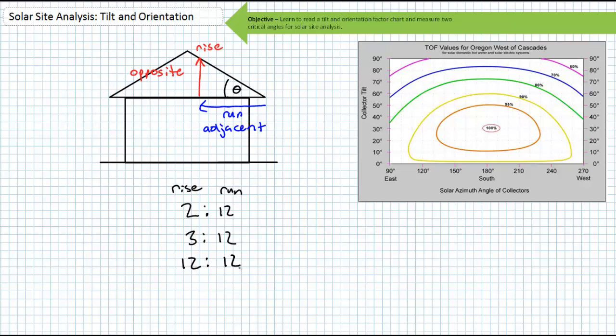For example, a house with a common 3/12 pitched roof will rise 3 feet if you measure it 12 feet away from the angle.